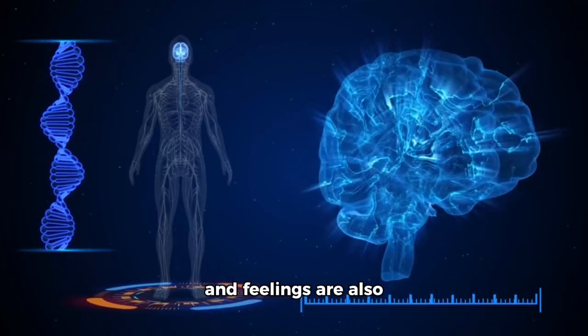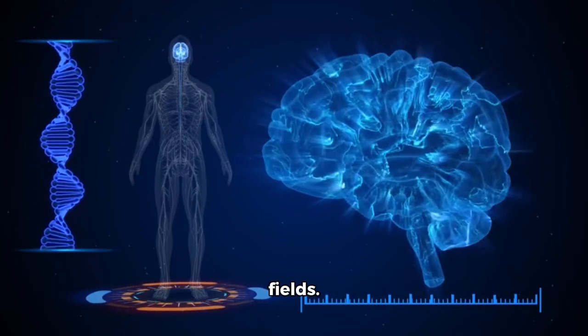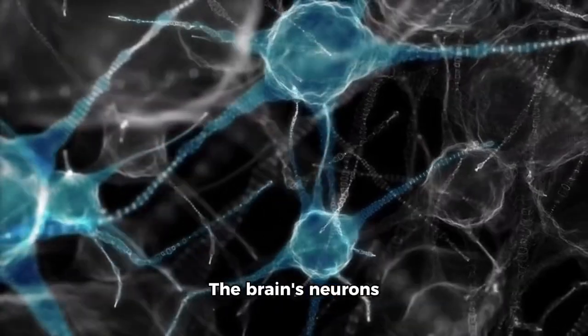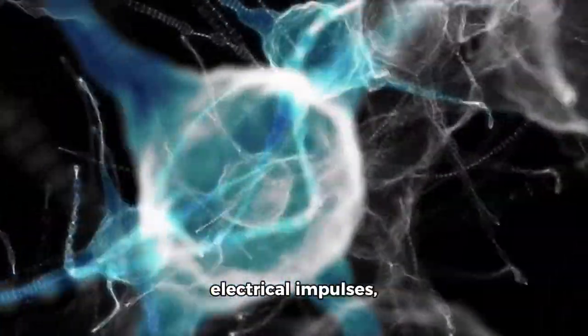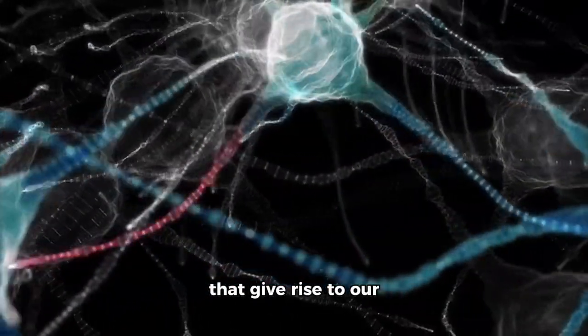Our emotions, thoughts, and feelings are also influenced by these electric and magnetic fields. The brain's neurons communicate through electrical impulses, creating complex networks that give rise to our consciousness, emotions, and thoughts.